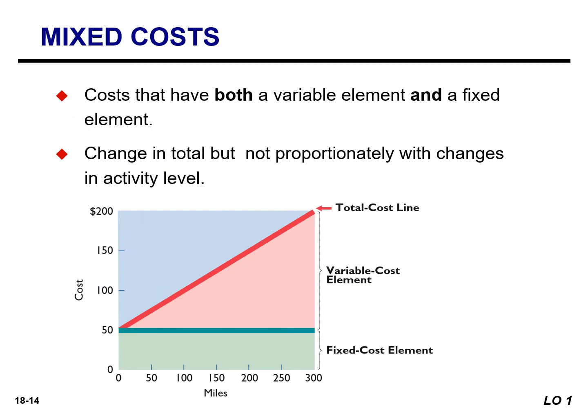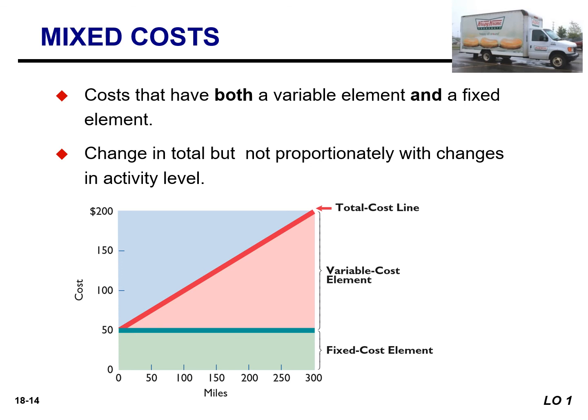We have one more thing to talk about: mixed costs. A mixed cost has both a variable element and a fixed element. These changes occur in total, but not proportionately with changes in the activity level. A great example is a U-Haul. There's a charge per day, but also a charge per mile. The per-day charge is a fixed cost, whereas the mileage charge is a variable cost. In the graphic, you can see the fixed cost of $50 per day as the fixed cost element, and then the more miles driven, the higher the variable costs will be.